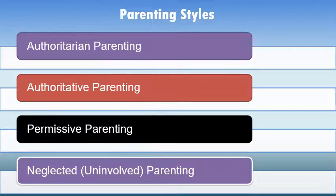There are four different parenting styles commonly seen in all families. We will see them one by one. First is authoritarian parenting, second is authoritative, then permissive parenting, and the last one is neglected or uninvolved parenting.